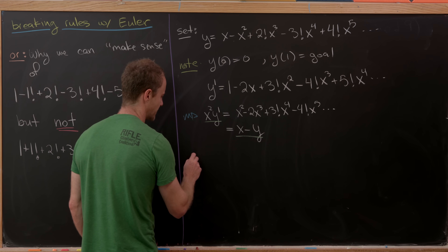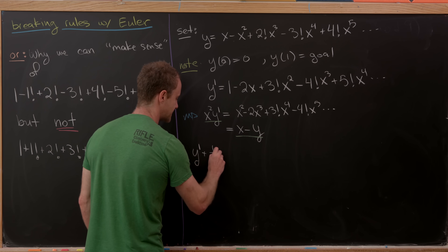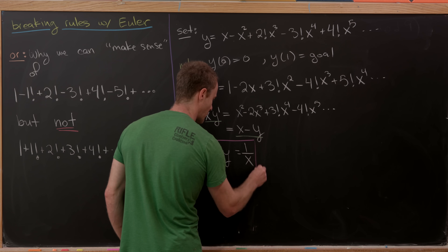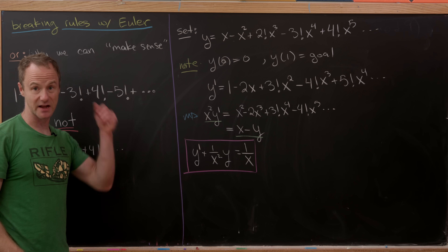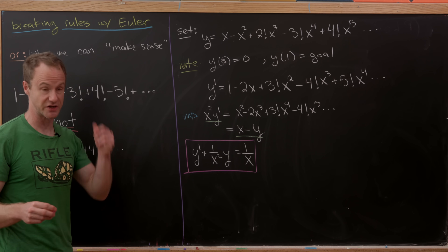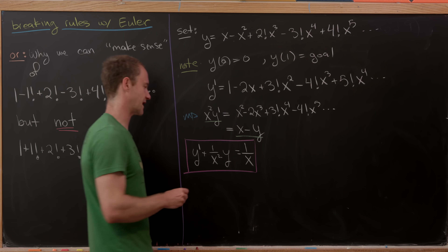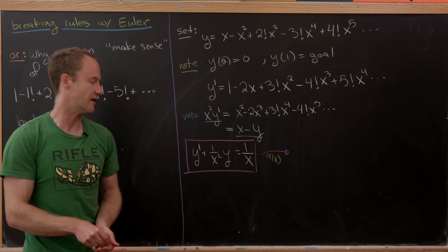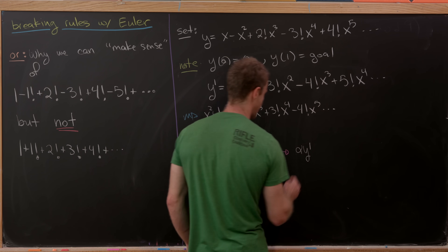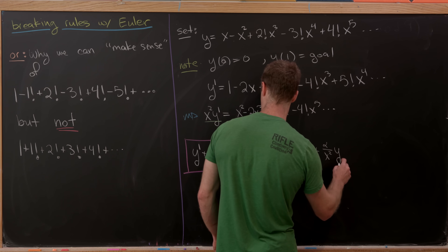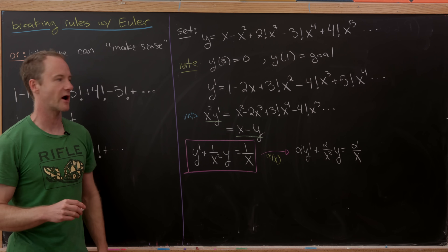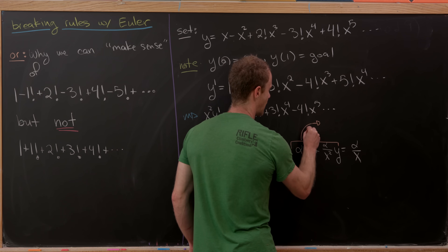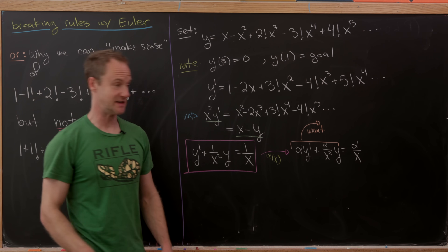We've got a differential equation for y. Let's rewrite it in a more standard way: y prime plus one over x squared times y equals one over x. This is a first-order linear differential equation, and there's a standard solution method. I'm going to sketch the derivation by multiplying by a so-called integrating factor, which I'll call alpha of x. That gives: alpha times y prime plus alpha over x squared times y equals alpha over x. The goal is to choose alpha so that the left-hand side is nice.